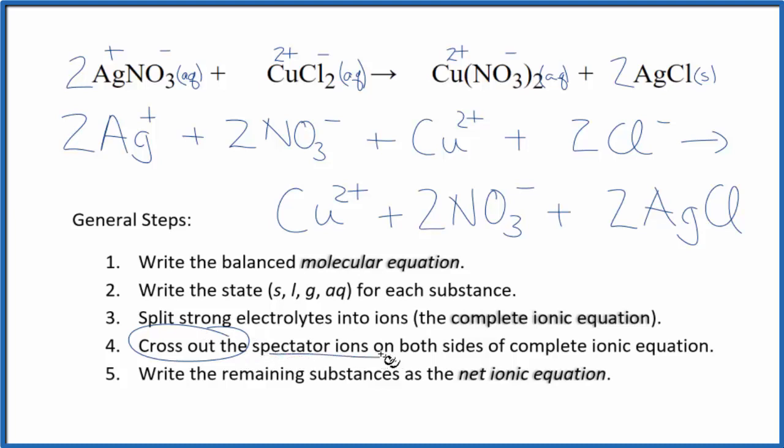Now we can cross out spectator ions. They're on both sides. In fact, they haven't really changed, so we're not interested in them. I can see I have 2 nitrate ions here in the reactants and 2 in the products. Cross those out. I can see I have a copper 2 ion here, copper 2 ion. Cross that out. But everything else, that's unique, and that makes up our net ionic equation for AgNO3 plus CuCl2.